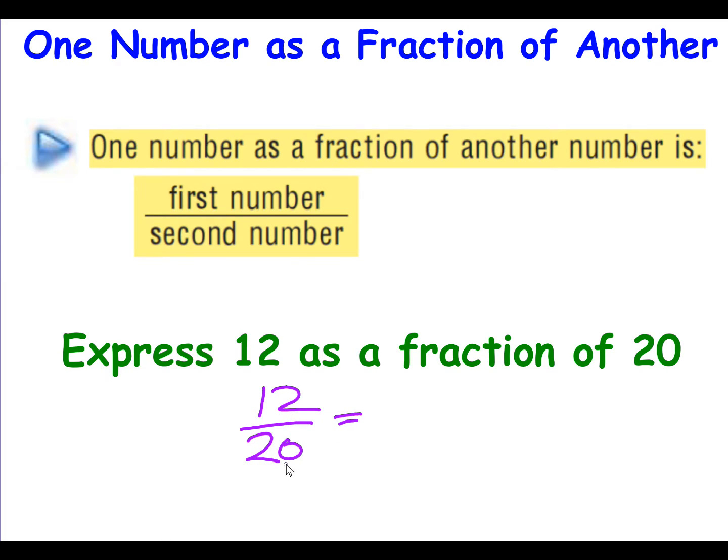So what number goes into 12 and 20? Well they're both even so I know they both divide by 2. Again they're both even so I can divide them both by 2 again. So 12 over 20 is the same fraction as three fifths. So express 12 as a fraction of 20 would be three fifths for all of the marks. This might get you one of the marks but this is where the real marks are at, is the simplifying process.